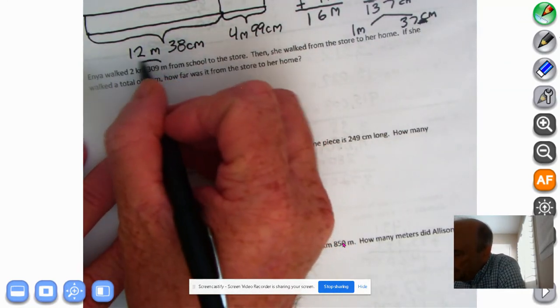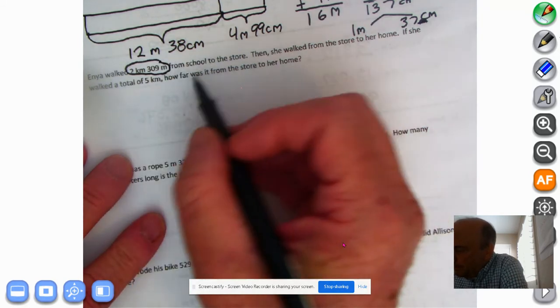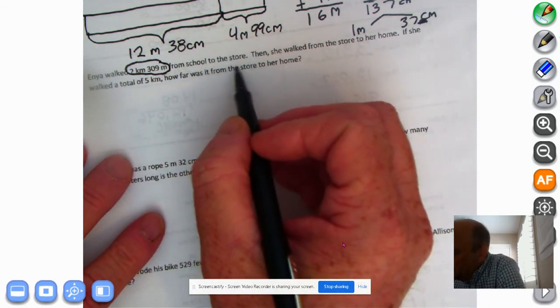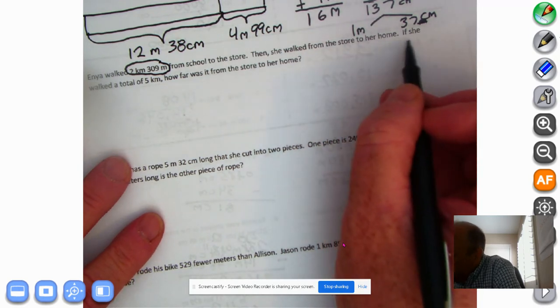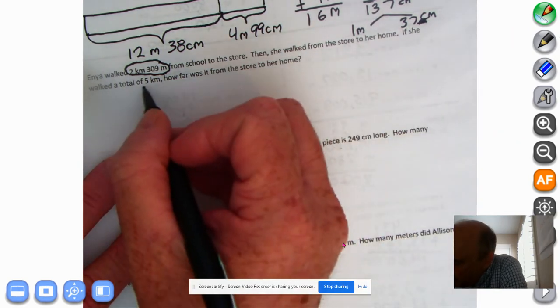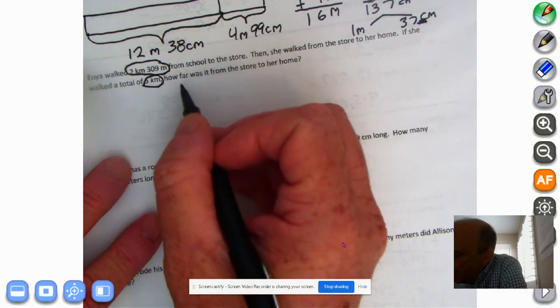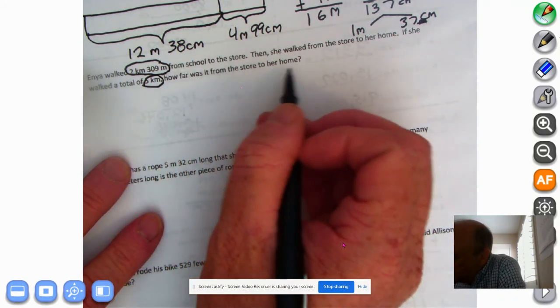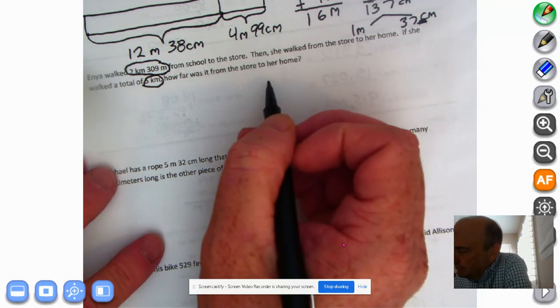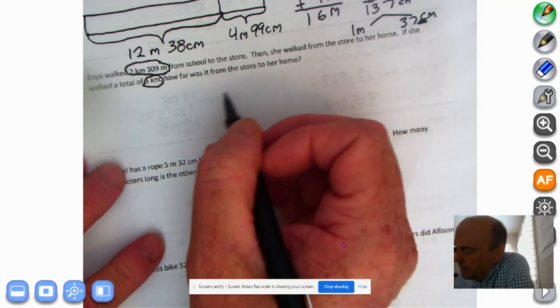Enya walked 2 kilometers, 309 meters. That's quite a walk. From school to the store. Then she walked from the store to her house. If she walked a total of 5 kilometers, how far was it from the store to her home?